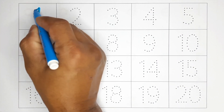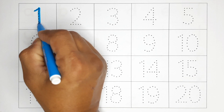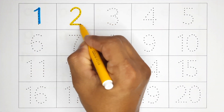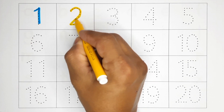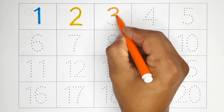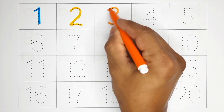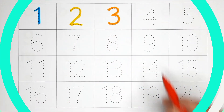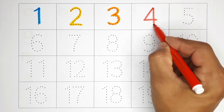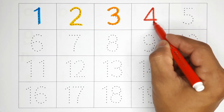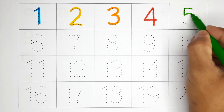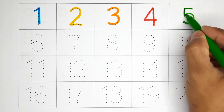One — this is one. Two — this is two. Three — this is three. Four — this is four. Five — this is five.